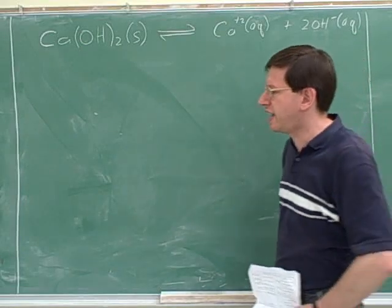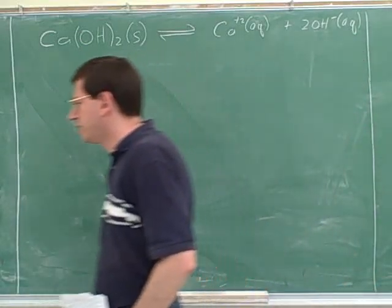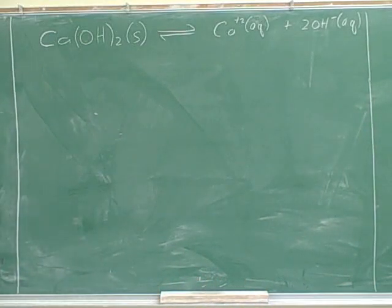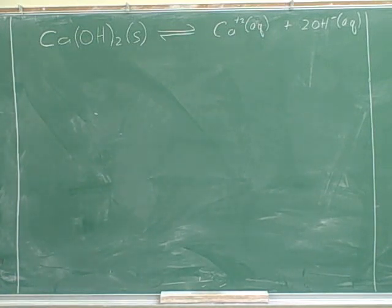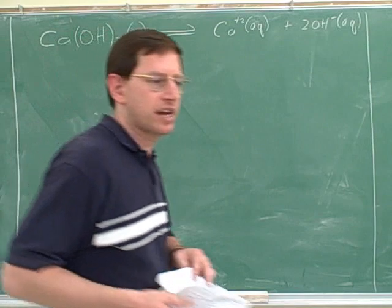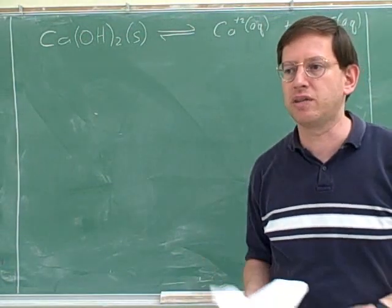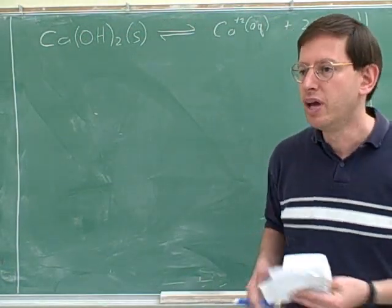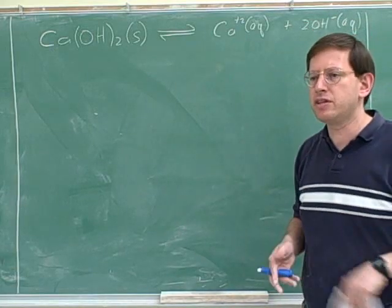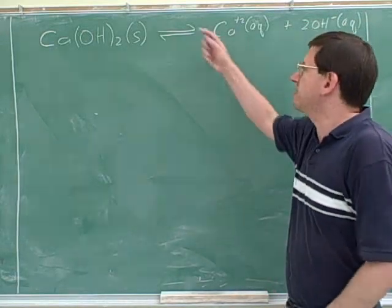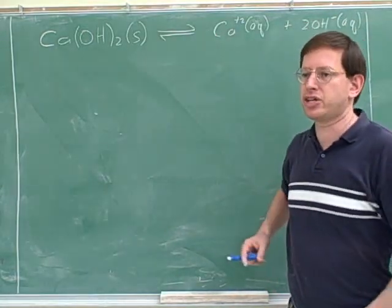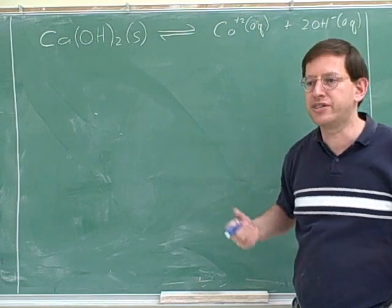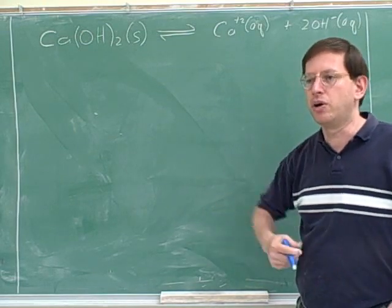Remember we said that some reactions go to equilibrium and some reactions go to completion. That was a big theme in the acid-base chapter — reactions with strong acids and bases went to completion, but if everything was weak, it went to equilibrium. We have to do the same thing here for this chapter: some of these dissolution reactions are going to go to completion, and some of them are going to go to equilibrium.